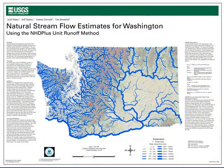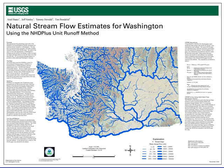One of the things we can do with this type of information is create a map showing surface water flow through the state of Washington. The width of the blue lines tells us how much water is flowing through the streams on a mean annual flow basis. This model gives us a picture of where the water is flowing through the surface water stream network.